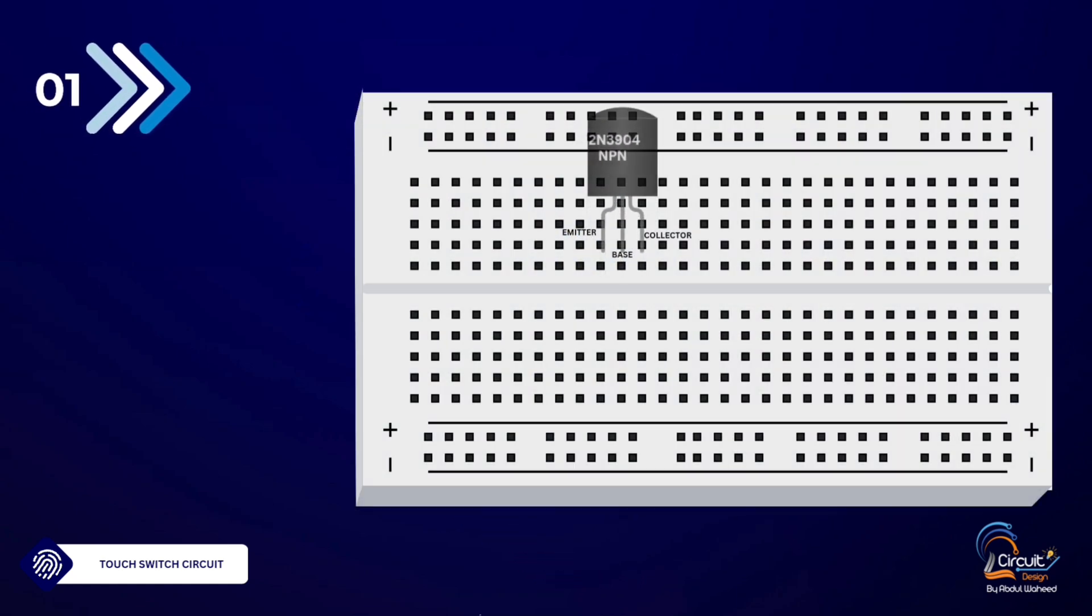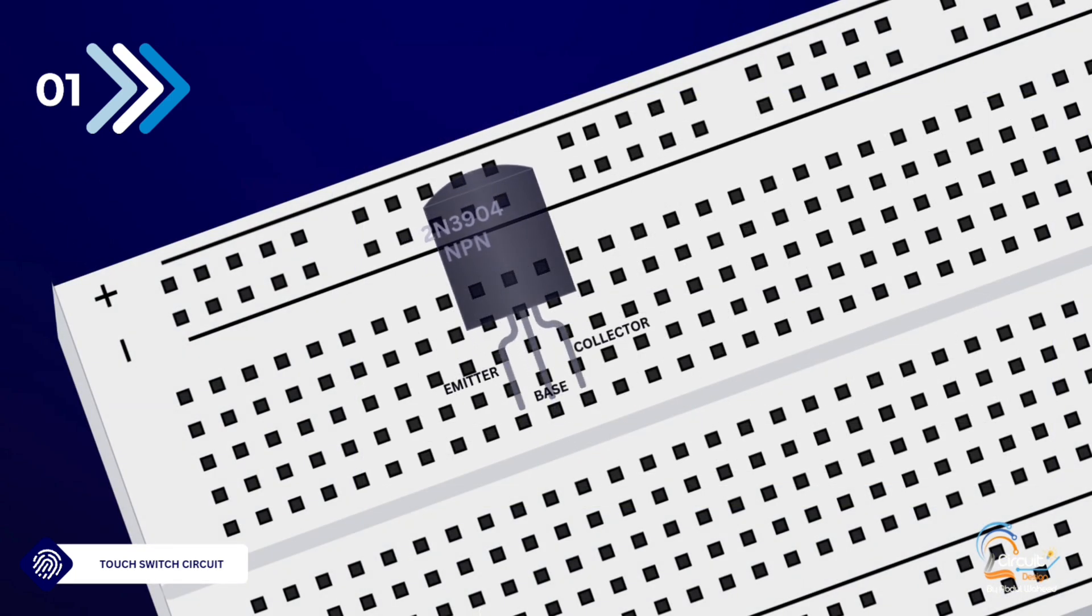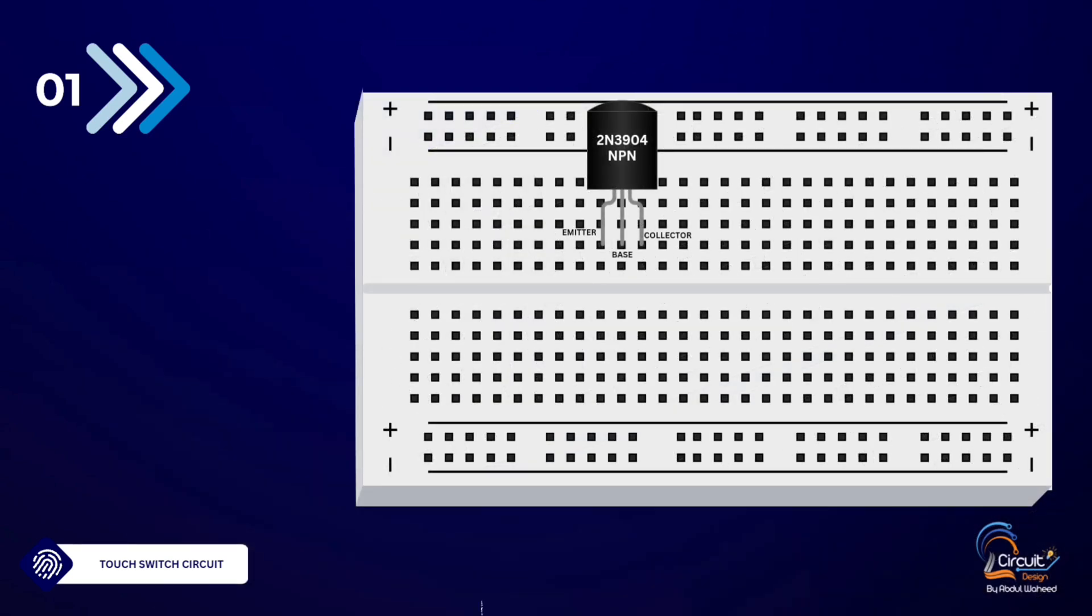Step 1: Setting up the transistor. Place the 2N3904 transistor on the breadboard. Remember, the pins are Emitter (E), Base (B), and Collector (C) from left to right when the flat side is facing you.